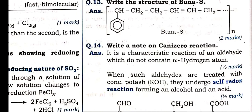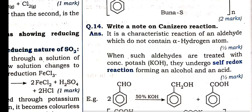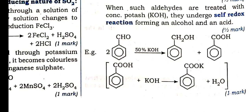Buna-S: butadiene-styrene rubber — structure of Buna-S from styrene and 1,3-butadiene. Cannizzaro reaction is given by aldehydes without alpha hydrogen — one will form benzyl alcohol and the other will form benzoic acid.